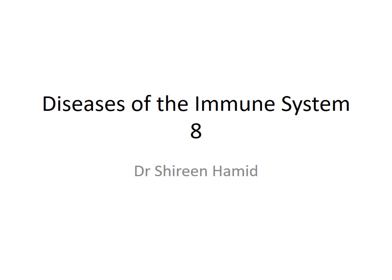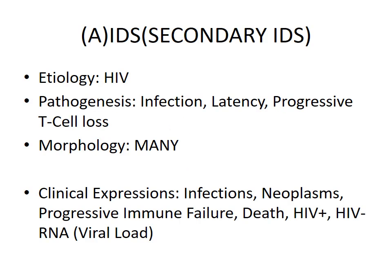We are going to discuss diseases of the immune system, specifically acquired immunodeficiency syndrome. The etiology is human immunodeficiency virus (HIV). Pathogenesis involves opportunistic infections due to viremia that leads to a latent period of many years, during which there is progressive T-cell loss, which leads to increased viral load, ultimately resulting in full-blown AIDS.